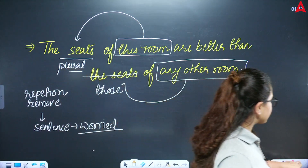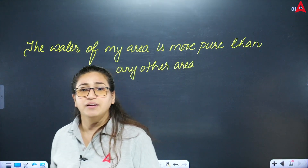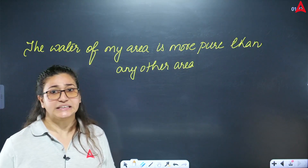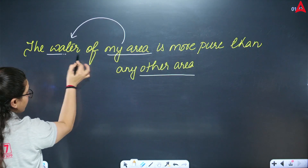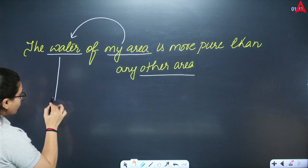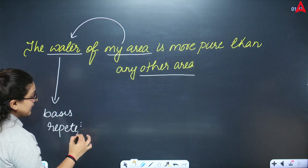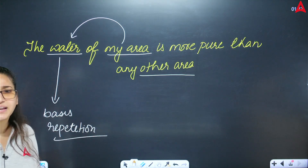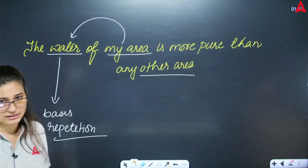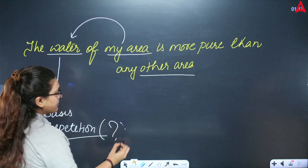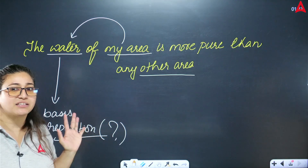Now if you have a singular condition, look at this example: 'The water of my area is more pure than any other area.' Notice that there is no comparison happening properly here — the basis is 'water.' As per our rule, repetition is not allowed. But is there actually a repetition here? What is written is: 'The water of my area is more pure than... any other area.' The word 'water' is not repeated. This means we are comparing water to an area, which is incorrect.